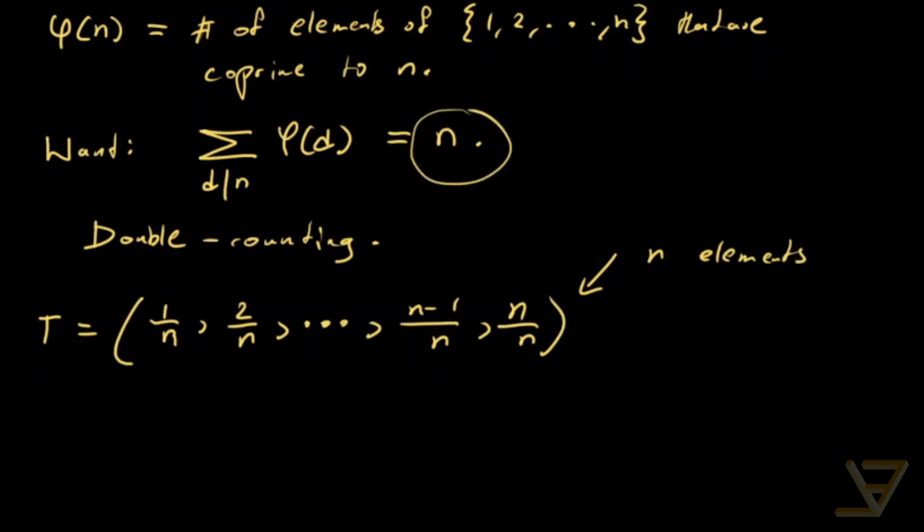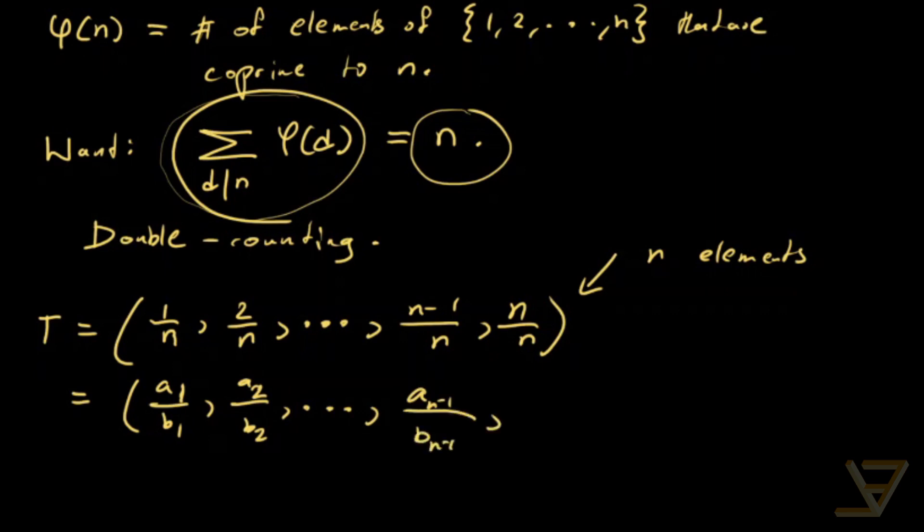But we want to show that it also has this number of elements, this sum. And the way we're going to do that is by reducing the fraction. So we get a1 over b1, a2 over b2, all the way through to a n minus 1 over b n minus 1, a n over b n. So these are all corresponding functions. So a1 over b1 is the reduced version of 1 over n, which is just 1 over n.